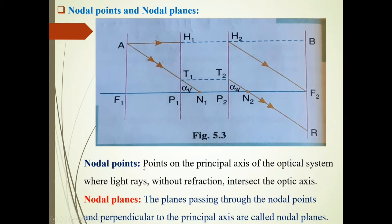Now see, nodal points are the points on principal axis of optical system where light rays without refraction intersect the optic axis. Here N1 and N2 are the nodal points, they intersect the optic axis. The nodal planes, planes passing through these nodal points, are called nodal planes.